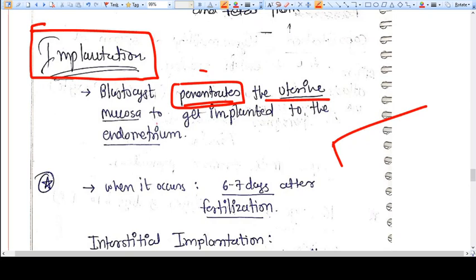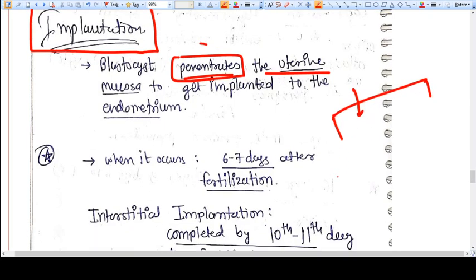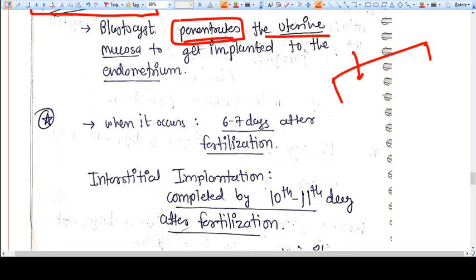The blastocyst not only attaches itself, it even penetrates the endometrium. It goes inside the endometrium with the help of enzymes. The time of implantation is around six to seven days after fertilization.